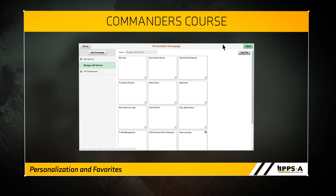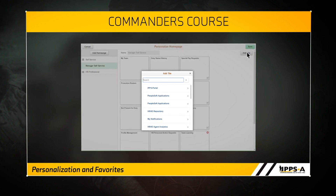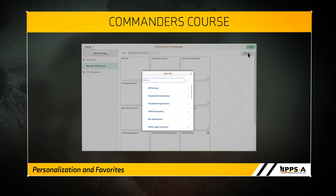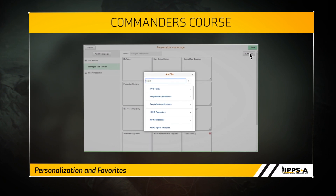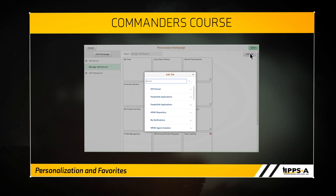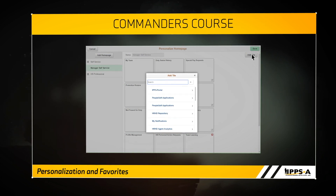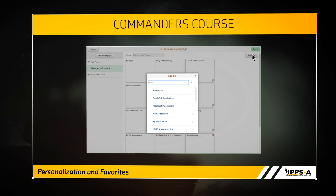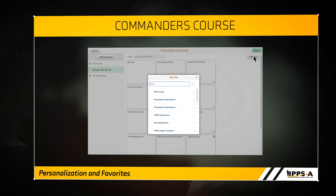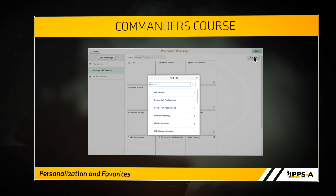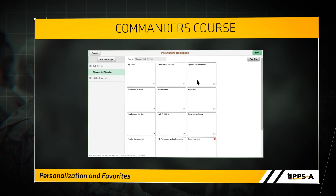Now click Add Tile. When the Add Tile menu appears, locate a tile you would like to add to the homepage and click on it to add it to your homepage. If a tile is deleted, it is automatically sent to a tile repository. These deleted tiles can be retrieved in the future if needed by simply re-adding them.